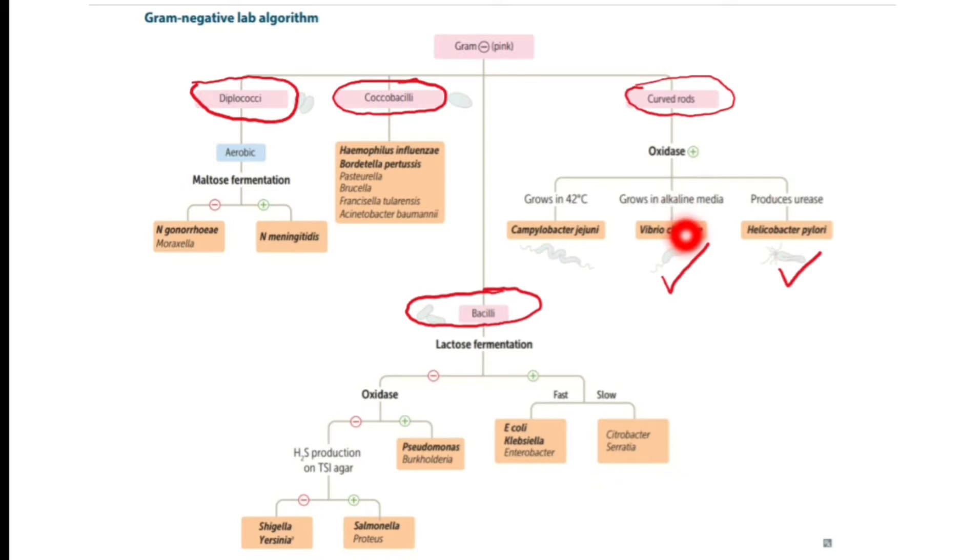The last one among the gram-negative curved rods is Campylobacter jejuni, which grows at 42 degrees Celsius.